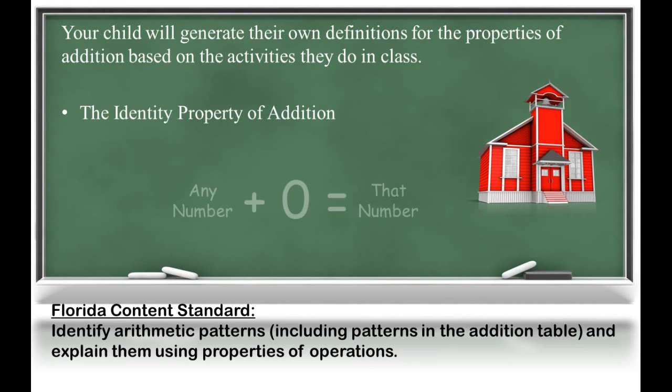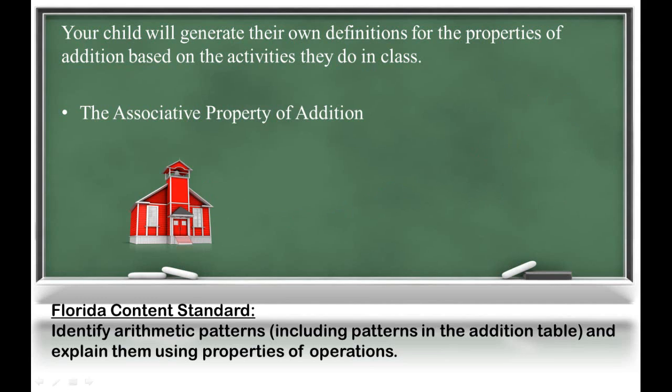In looking closely at the identity property, I know that any number plus 0 must equal that same number. The final property of addition that your student will discover is the associative property of addition, or the grouping property.